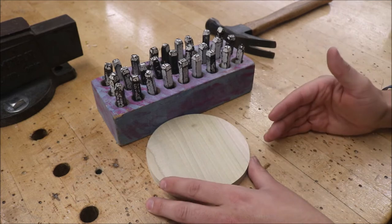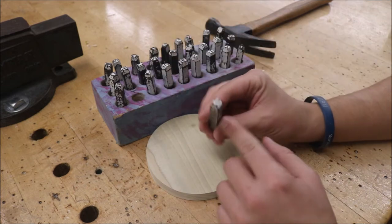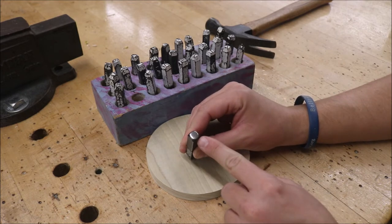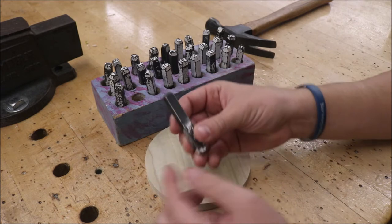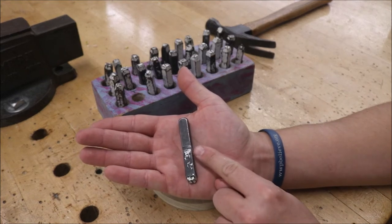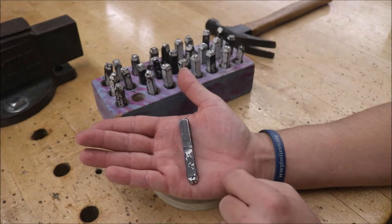So the only things you really have to worry about is, one, make sure that the letter that you're using is facing down and touching the top of the piece of wood. The shiny part that you hit with a hammer should be facing up, and then you're going to see on most of these pieces there's a groove or a notch. In order for this to line up perfectly, that has to be facing towards you.